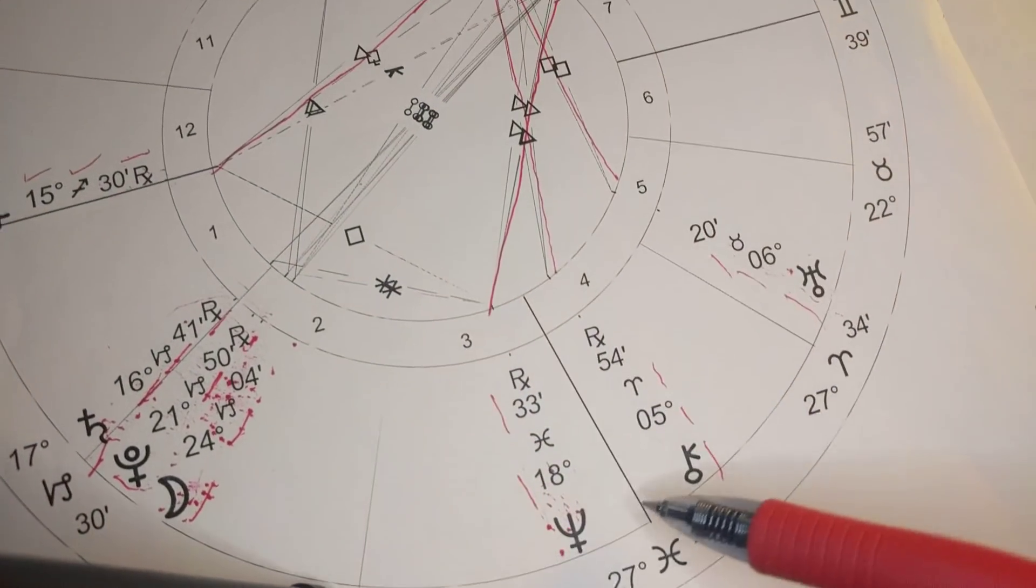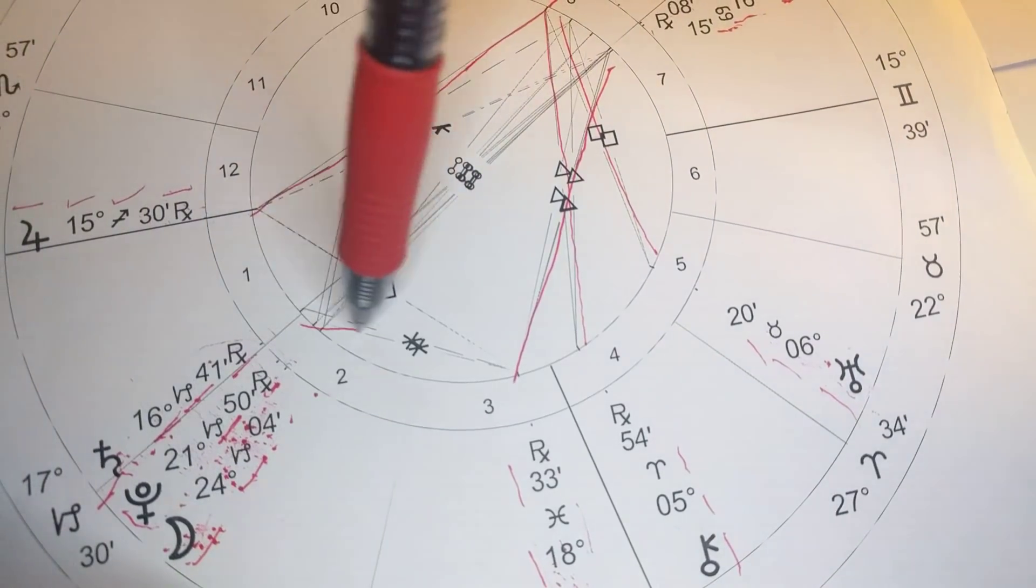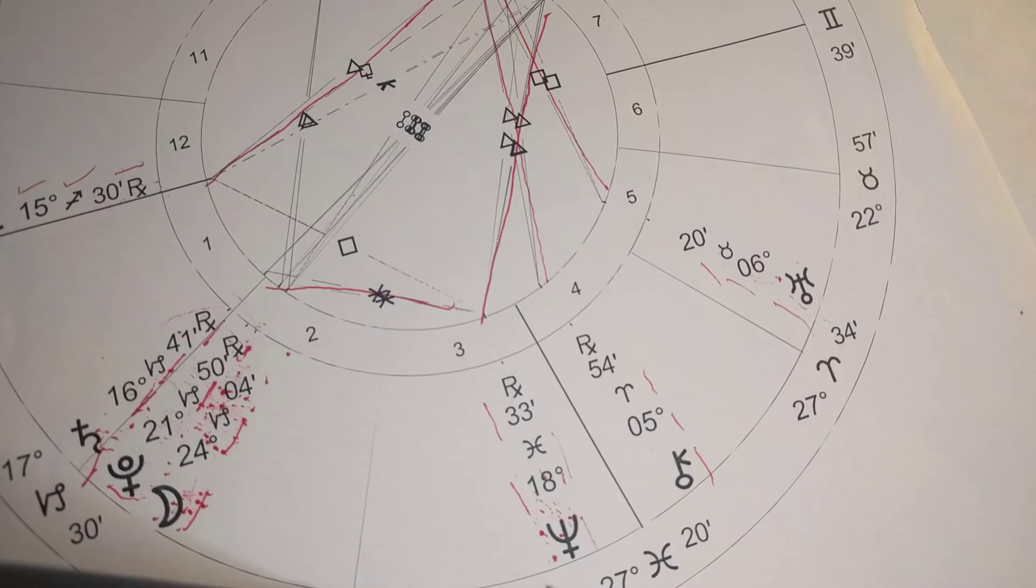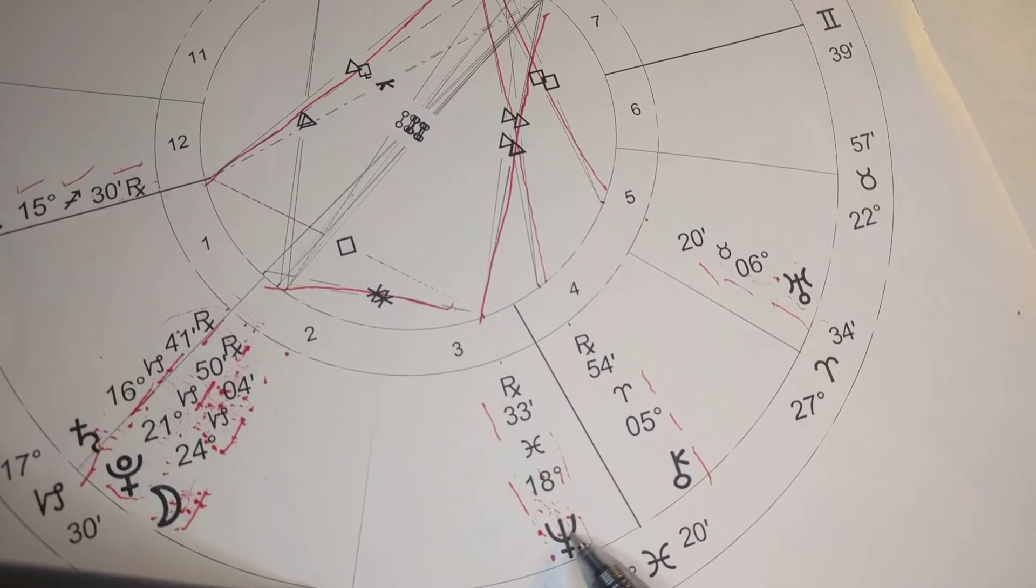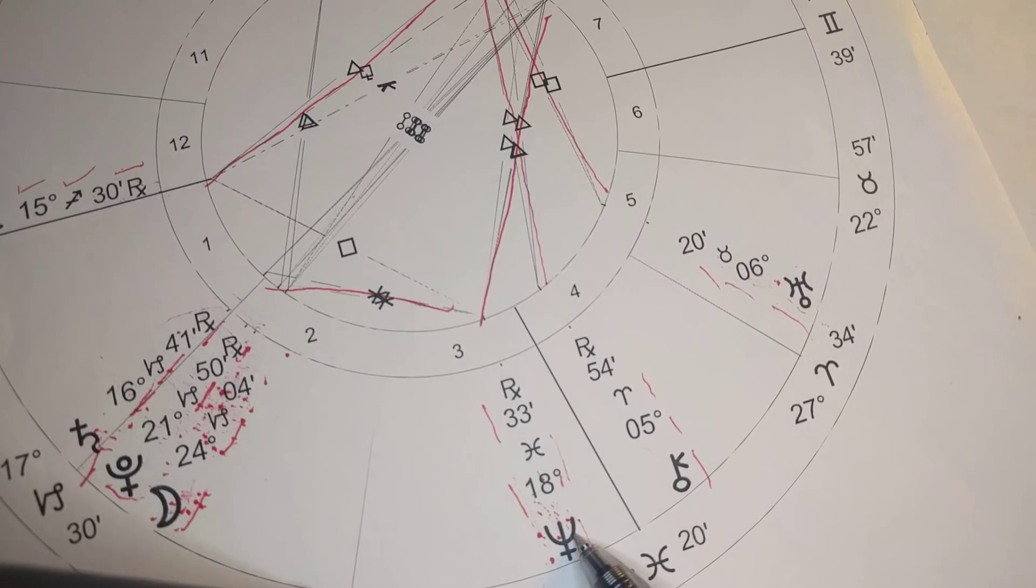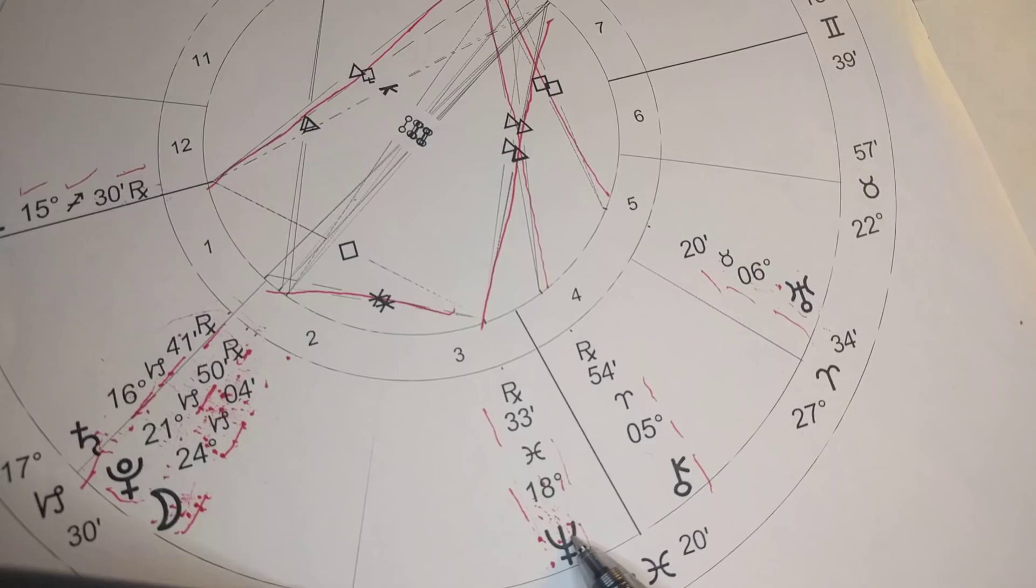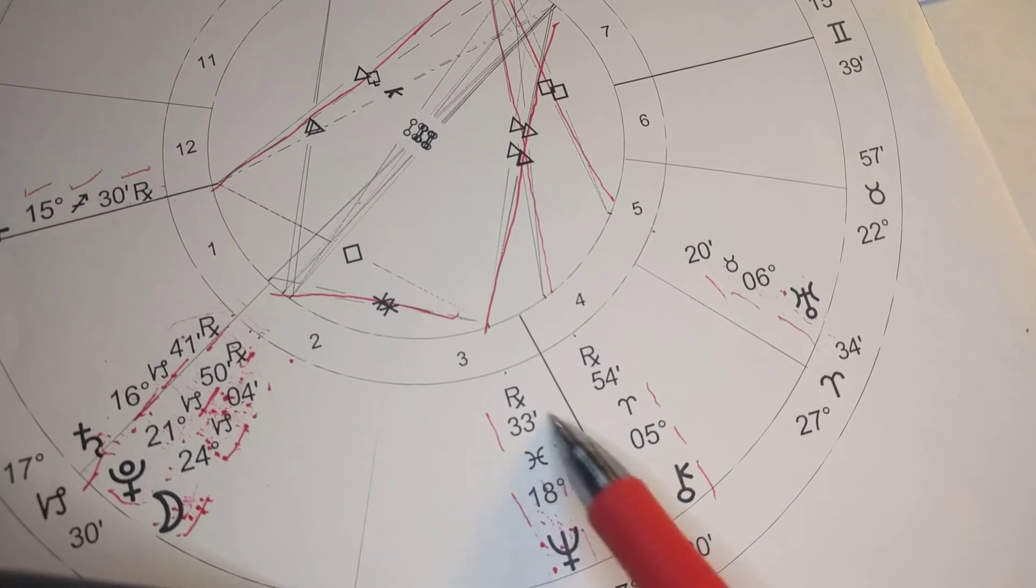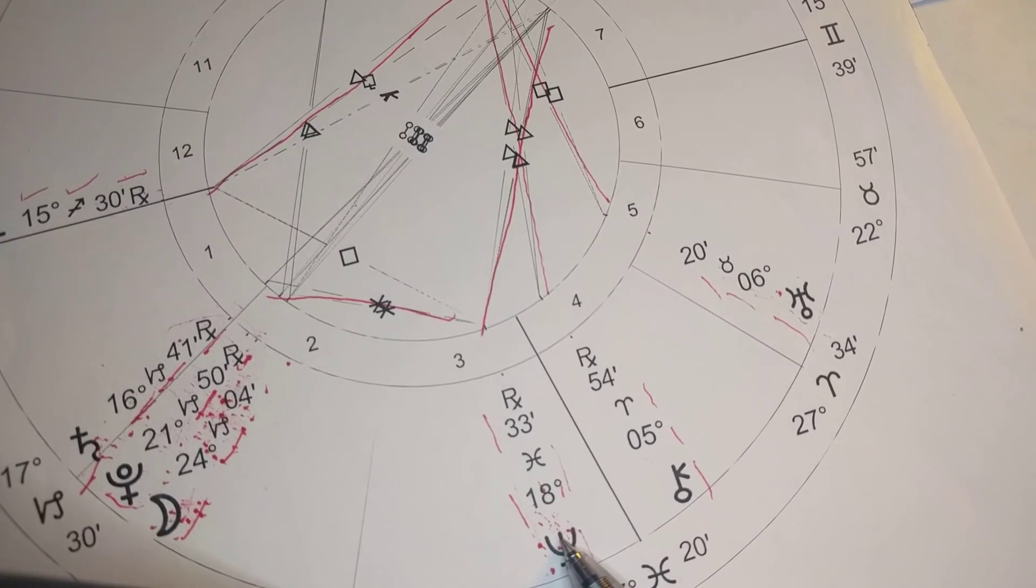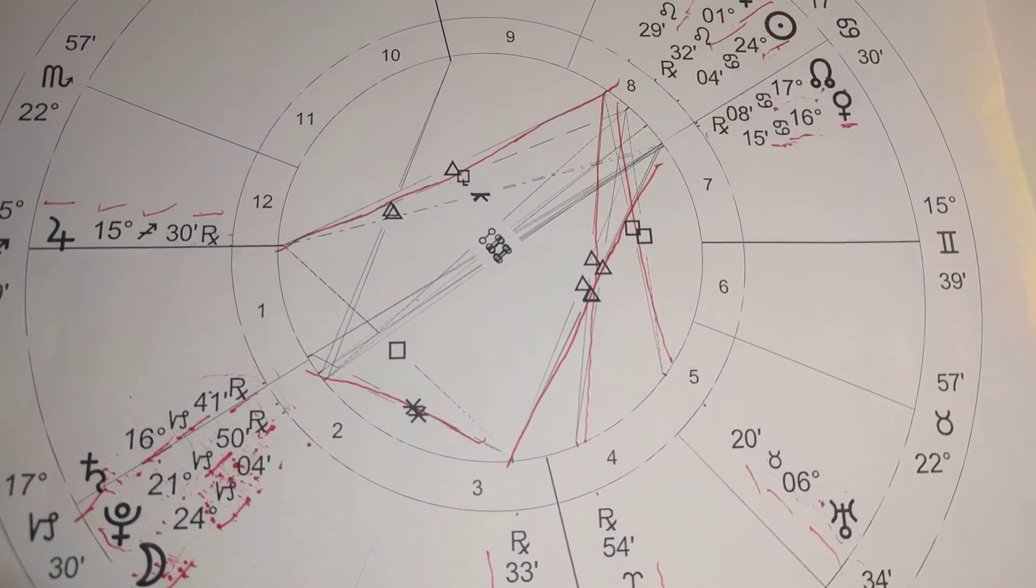And then this awesome Neptune trine and sextile is reminding you that you're above this time and space, and you're above this reality and this place in the timeline of humanity. It's like that whole bigger picture that we carry with us. So it's quite a big lunar eclipse.